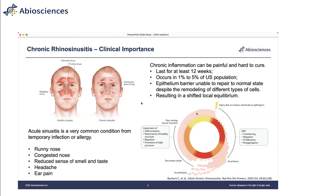Sometimes when the lining is damaged beyond repair or inflammation persists, the epithelium enters a different state — what we call a shifted local equilibrium. The epithelium cannot repair itself, or when it does, it results in persistent inflammation where the mucosa is not intact and cannot protect us from chemicals or pathogens. Chronic rhinosinusitis happens when the rhinosinusitis lasts for at least 12 weeks. It's very common, occurring in 1% to 5% of the whole US population, and despite intense study, many things remain unknown.